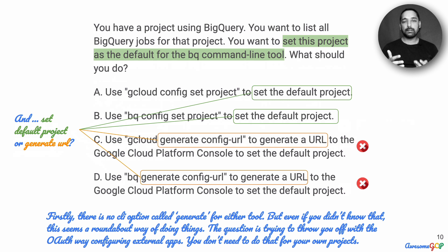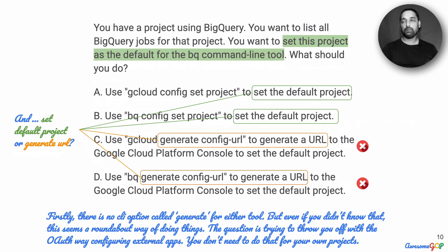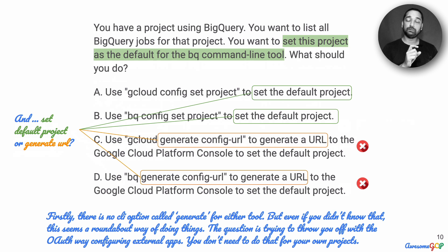What this question is trying to confuse you with is the OAuth approach to configuring external apps. When you're configuring external apps, it takes you to a web browser where you log in, and that gives you the OAuth token used by the application. That is not the approach that Google Cloud uses, because not everything in Google Cloud is going to be done via a browser. You could SSH into the Google Cloud project and configure settings without needing an OAuth mechanism. So we can eliminate the generate config URL option.